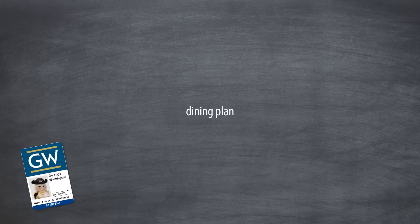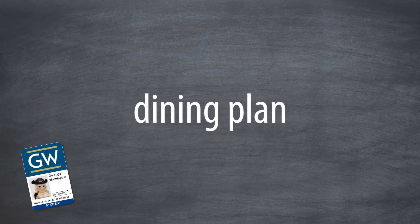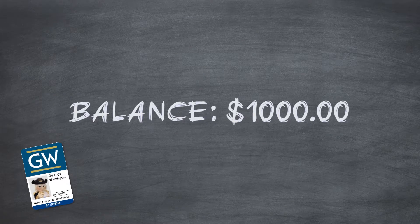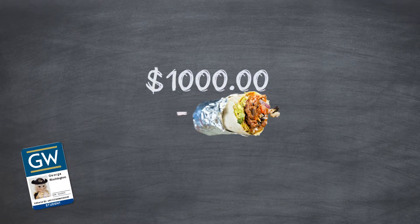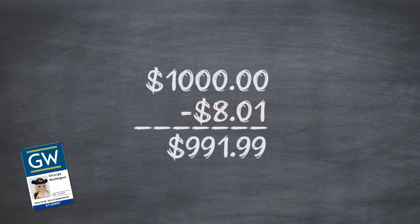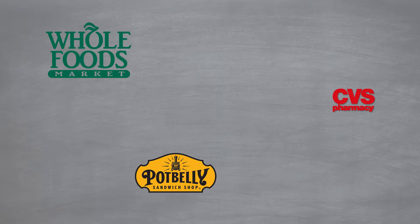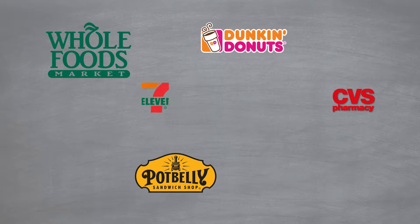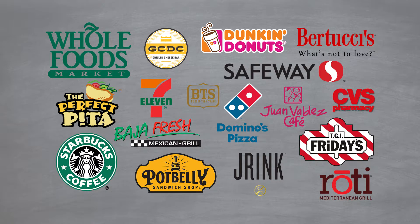Number three, the GWO card can be used to access the cash value in your dining plan. Your dining plan is a declining balance comparable to a debit card — you can only spend the funds available. GWO dining plan funds are accepted at over 90 participating restaurants, groceries, and convenience stores around campus. You can add additional value at any time.